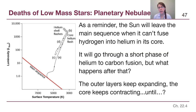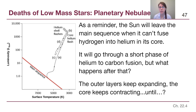Let's start with a reminder of what we've talked about so far from the previous chapter. The Sun is going to leave the main sequence when it can no longer turn hydrogen into helium in its core. As it leaves the main sequence to become a red giant, it will go through a short phase of helium to carbon fusion. From point B to about point C on this track is when helium to carbon fusion is able to happen in the core — we call it the triple alpha process. But at some point that runs out too.